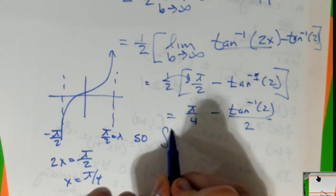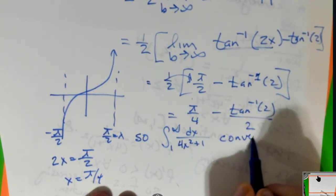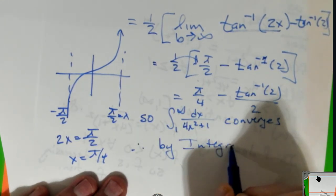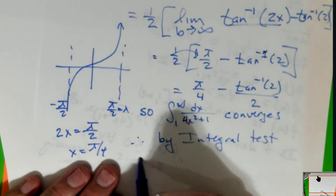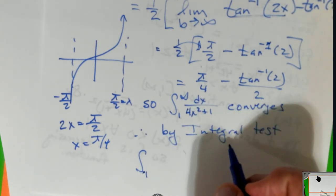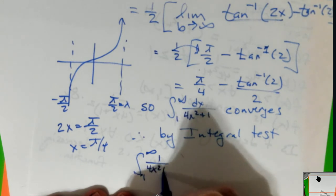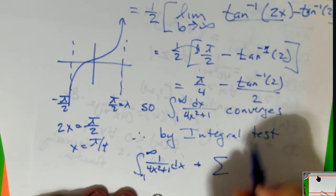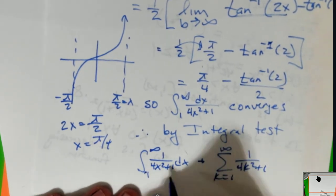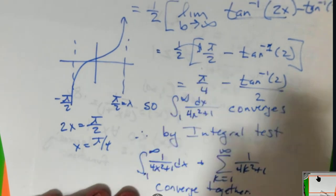So what does this mean? So the improper integral converges. Therefore, by the integral test, the improper integral from one to infinity of one over four x squared plus one dx, and the infinite sequence from k equals one to infinity of one over four k squared plus one converge together. Now, that was a lot of work.